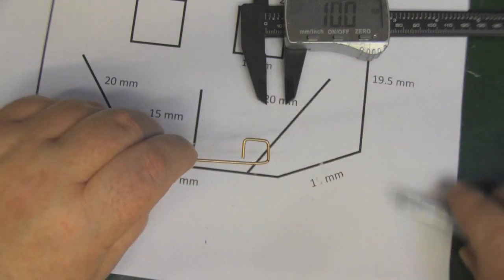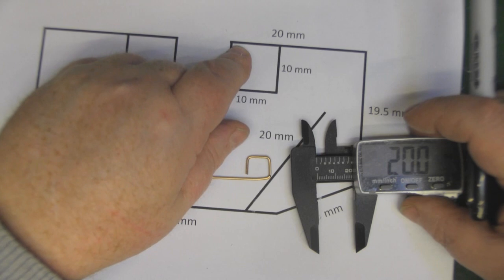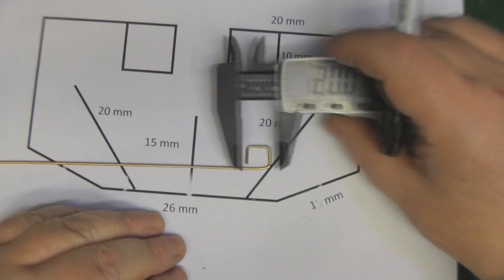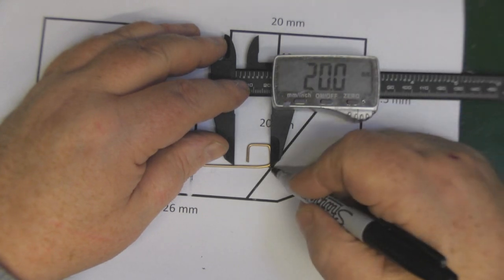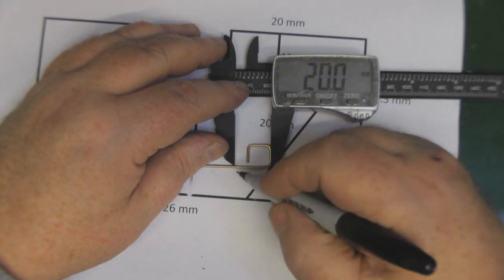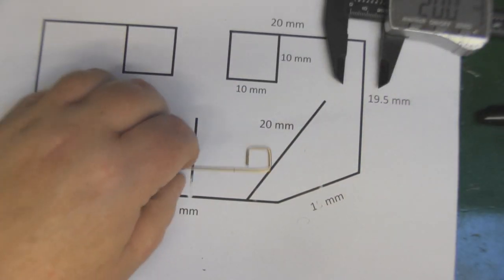There we go, can straighten it up a little bit at the end as well. My next measurement is 20 millimeters from here to here, so again using my calipers roughly in the middle of that corner there, pop a little mark and then put a right angle bend in again.